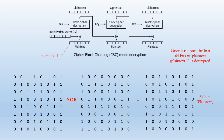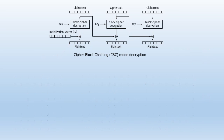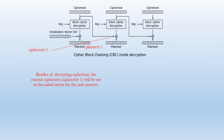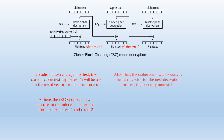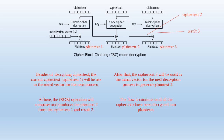Once it is done, the first 64 bits of plain text are decrypted. Besides decrypting the cipher text, the current cipher text will be used as the initialization vector for the next process. The XOR operation compares and produces the plain text from cipher text 1 and result 2. After that, cipher text 2 will be used as the initialization vector for the next decryption process to generate plain text 3. This flow continues until all cipher texts have been decrypted into plain text.